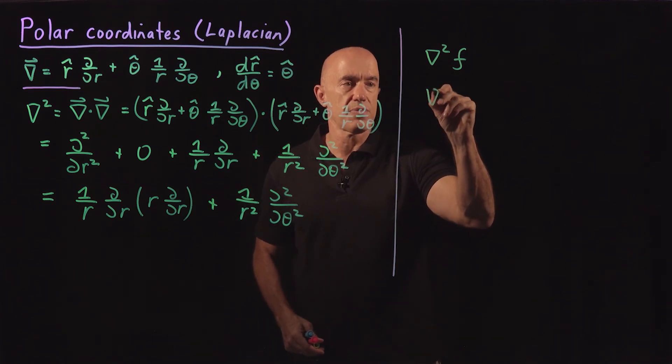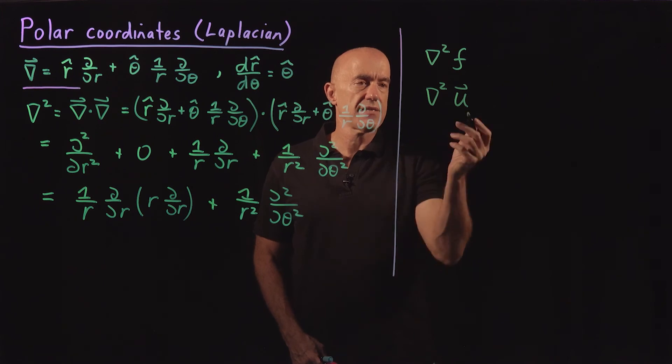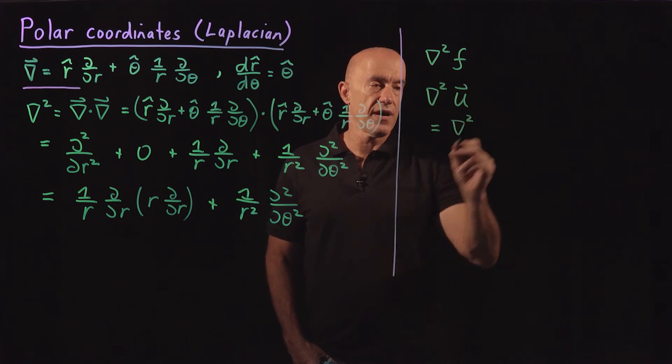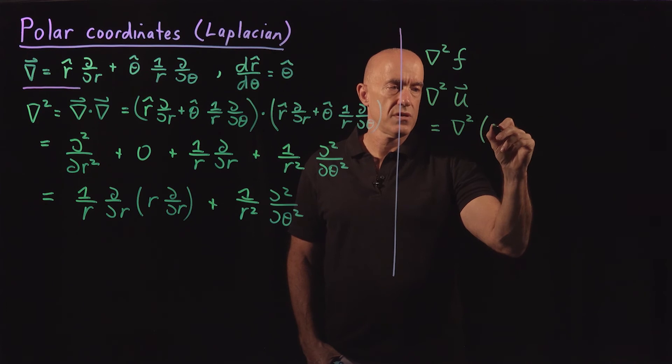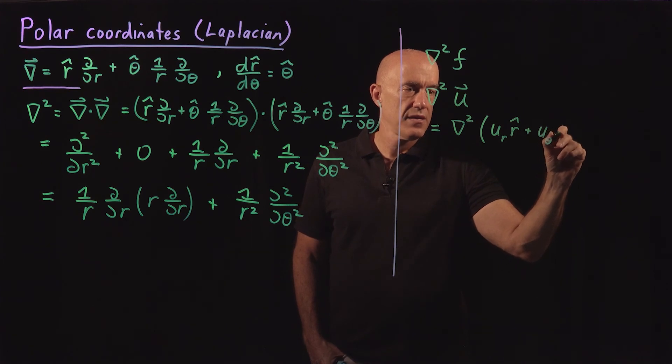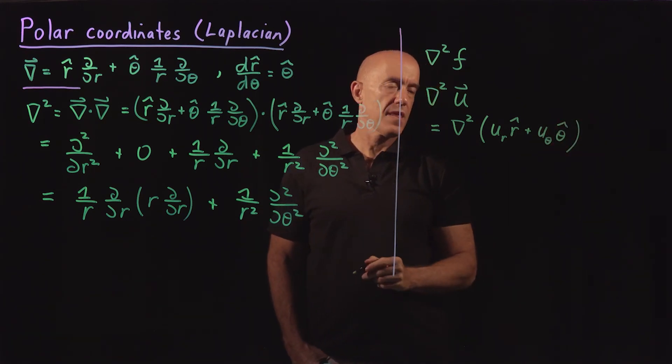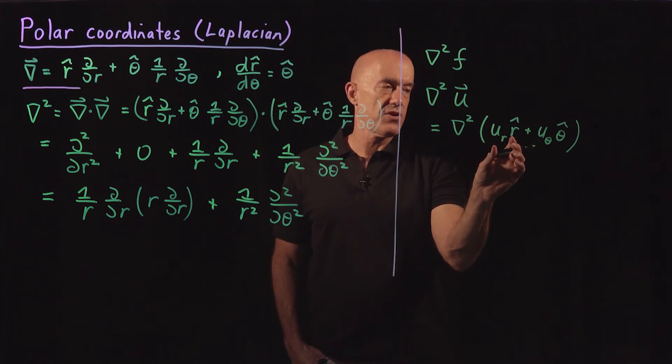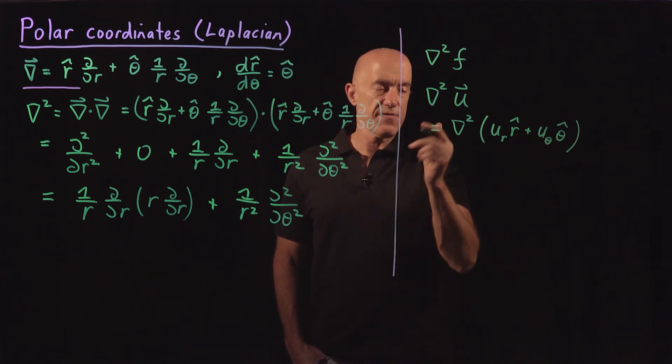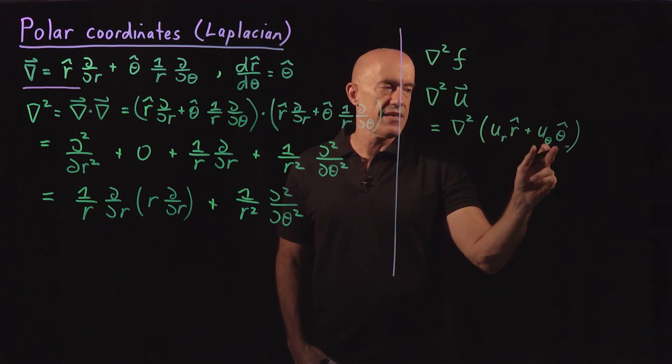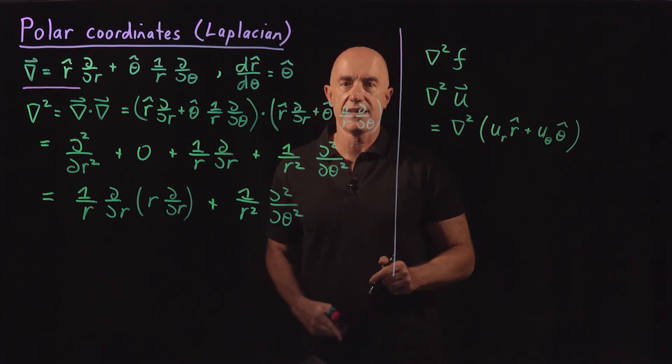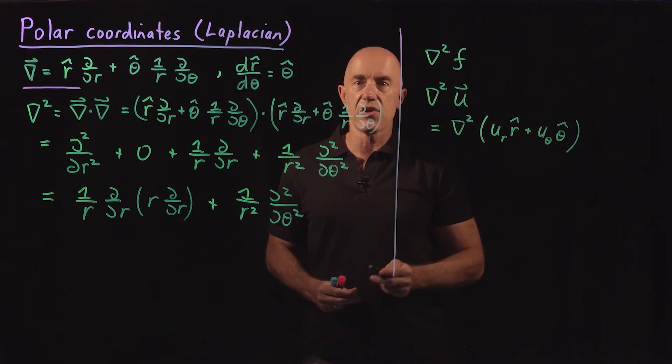Or we can take the Laplacian of a vector field. The Laplacian of the vector field is equal to the Laplacian of u_r r hat plus u_θ theta hat. And then we have to take the Laplacian of this first term and the Laplacian of this second term. The difficulty here is that these unit vectors depend on theta. So when you differentiate with respect to theta, you have to take that into account. So this can turn out to be a very complicated expression.